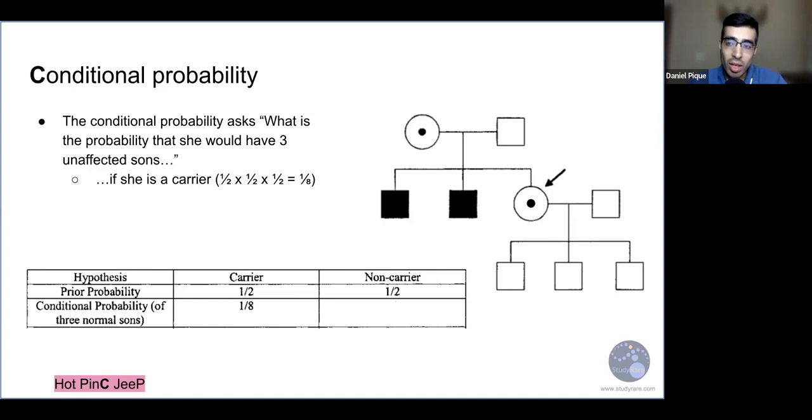Okay, next we're going to talk about the conditional probability. This is the C in pink. So the conditional probability is really asking, in this case, what is the probability that she would have three unaffected sons if she's a carrier? So in this case, we'll just go column by column. So we'll start with this first column. What if she truly was a carrier? Okay, let's just say in a world, if we knew for certain that she was a carrier, what are the chances that she's going to have three unaffected sons? And that probability is one half times one half times one half, which equals one eighth. So if she's a carrier, the probability that she has three unaffected sons is one over eight. So we're going to put one eighth here in this grid.